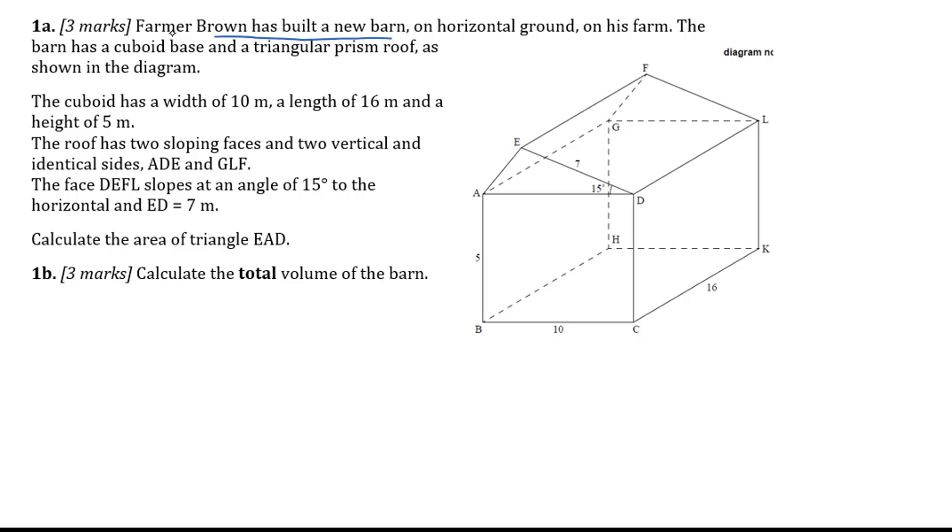Let's go to question 1. Farmer Brown has built a new barn on horizontal ground on his farm. The barn has a cuboid base and a triangular prism roof as shown in the diagram. The cuboid has a width of 10 meters, a length of 16 meters, and a height of 5 meters. The roof has two sloping faces and two vertical and identical sides ADE and GLF. The face DEFL slopes at an angle of 15 degrees to the horizontal and ED equals 7 meters.